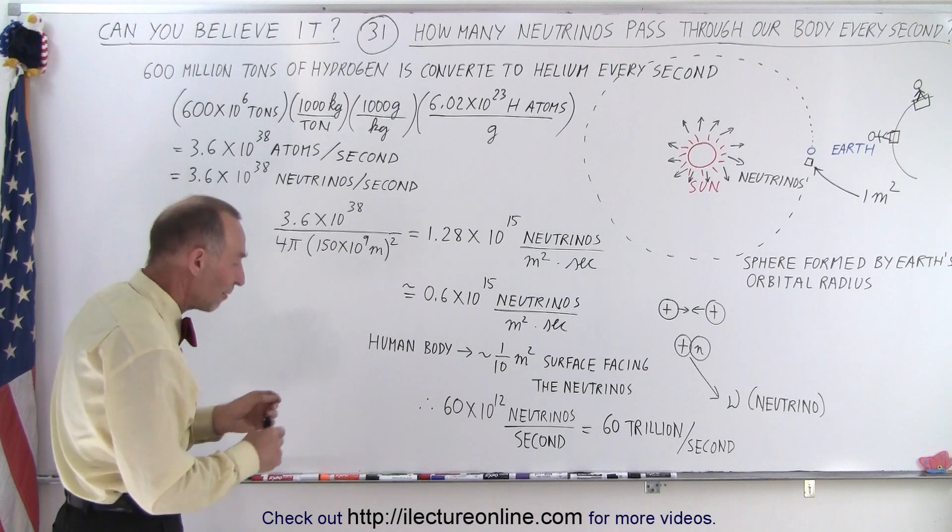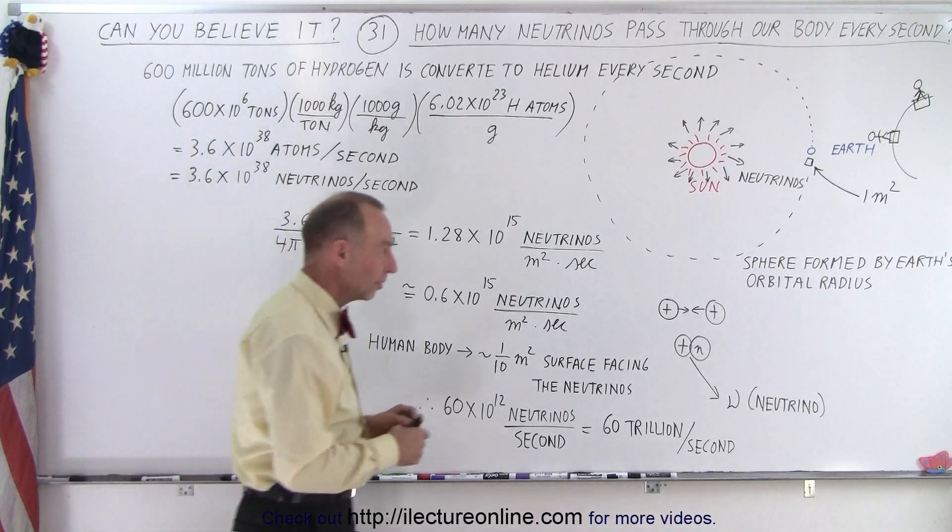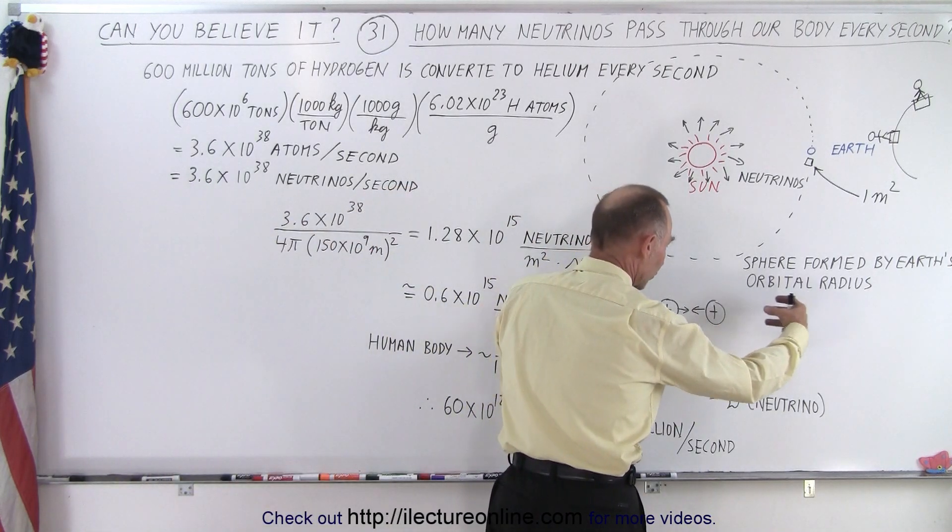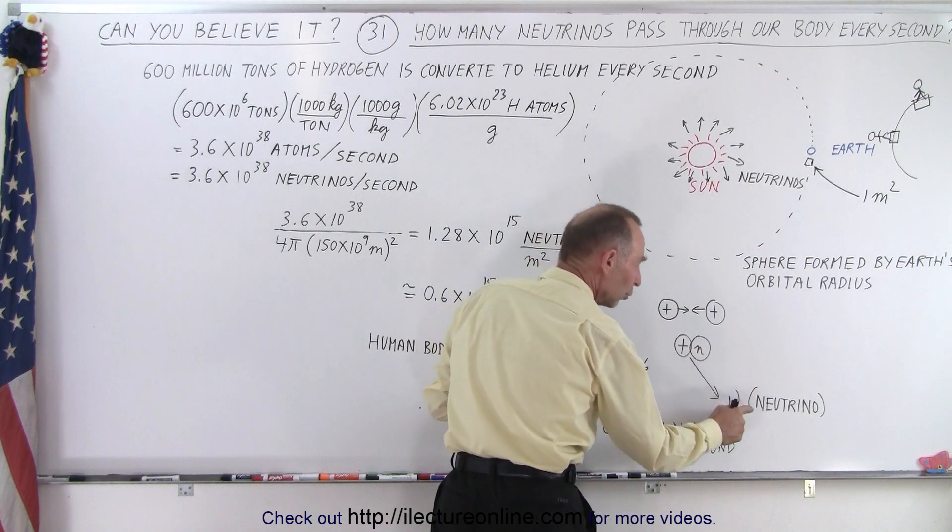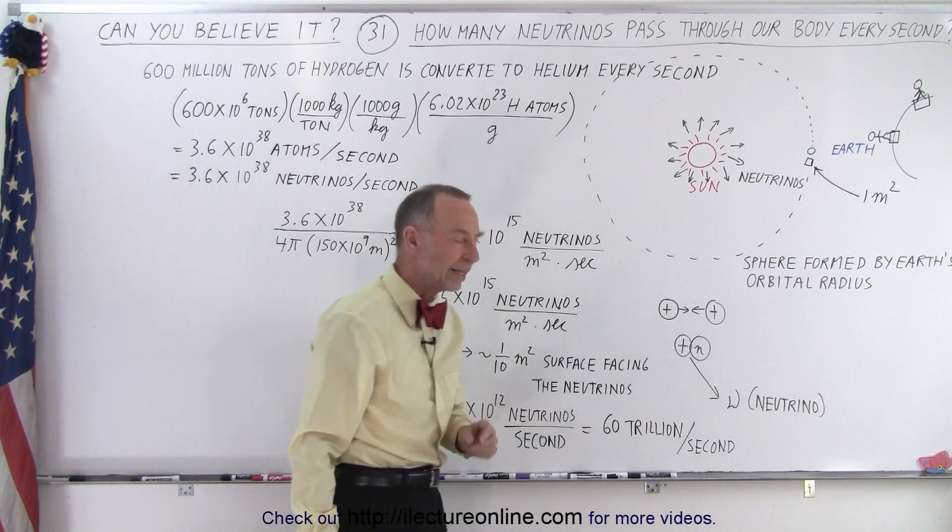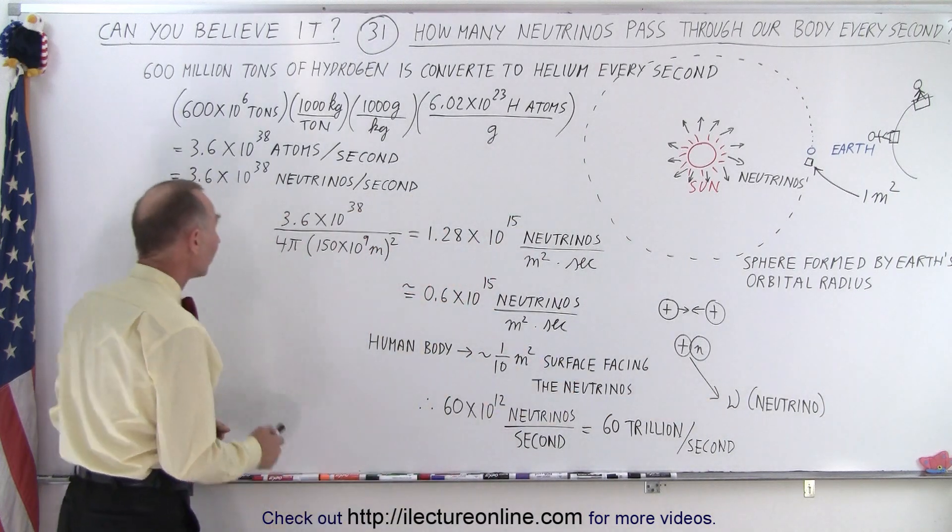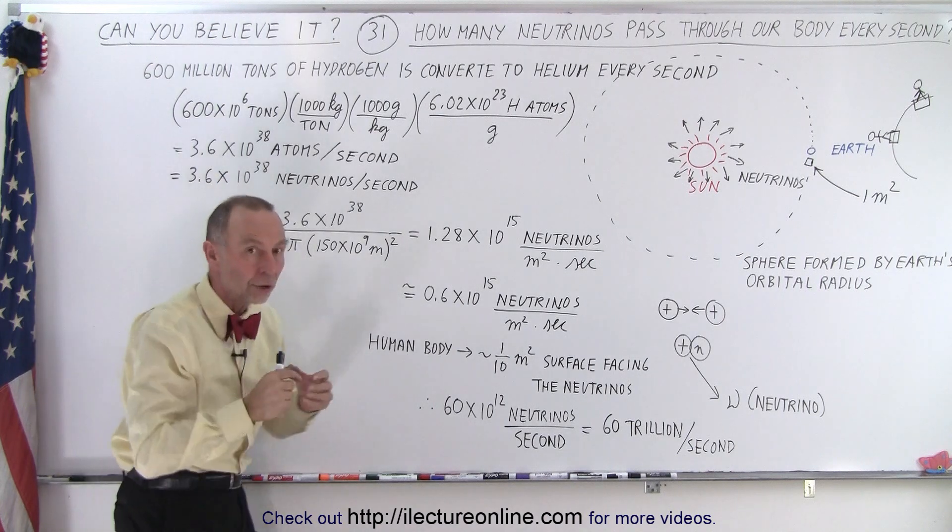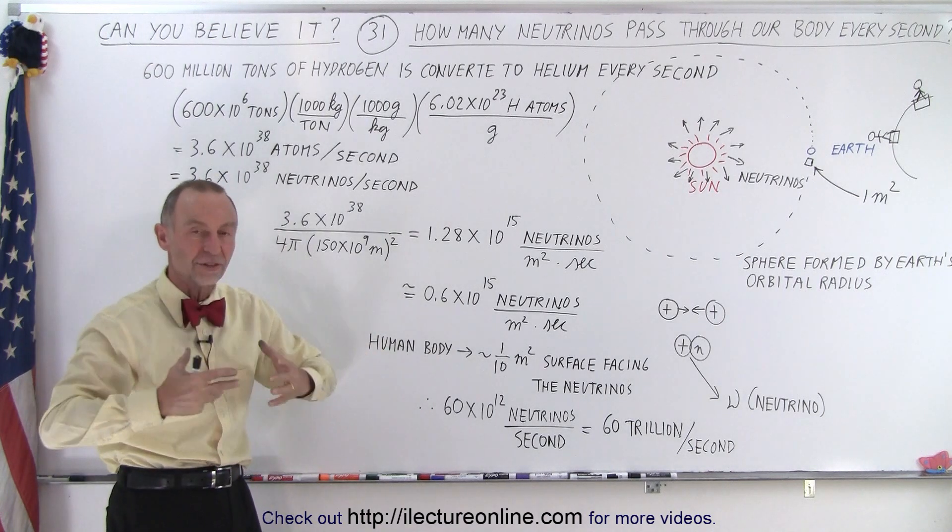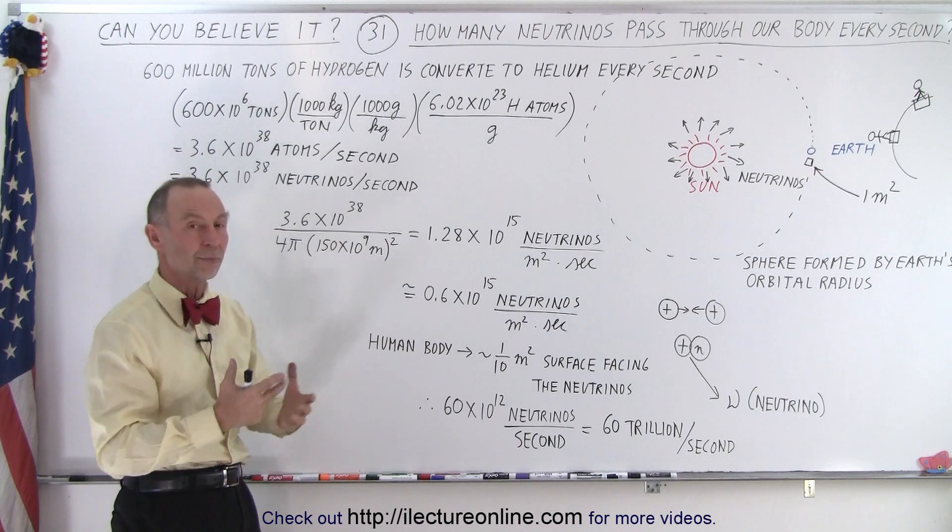That ends up being 3.6 times 10^38 atoms of hydrogen that are converted into helium every single second in the Sun. And for each one of those reactions, and that happens when two protons slam together to turn themselves into a deuteron, a neutrino is ejected. And that's a symbol for a neutrino.